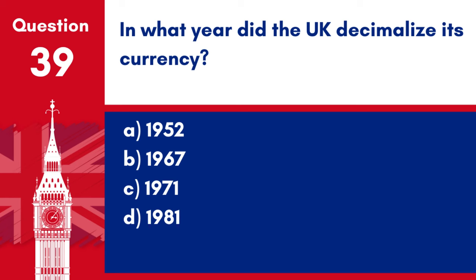Question 39. In what year did the UK decimalise its currency? a. 1952. b. 1967. c. 1971. d. 1981. Answer: c. 1971. The UK decimalised its currency in 1971, moving from pounds, shillings and pence to a system based on pounds and pence.